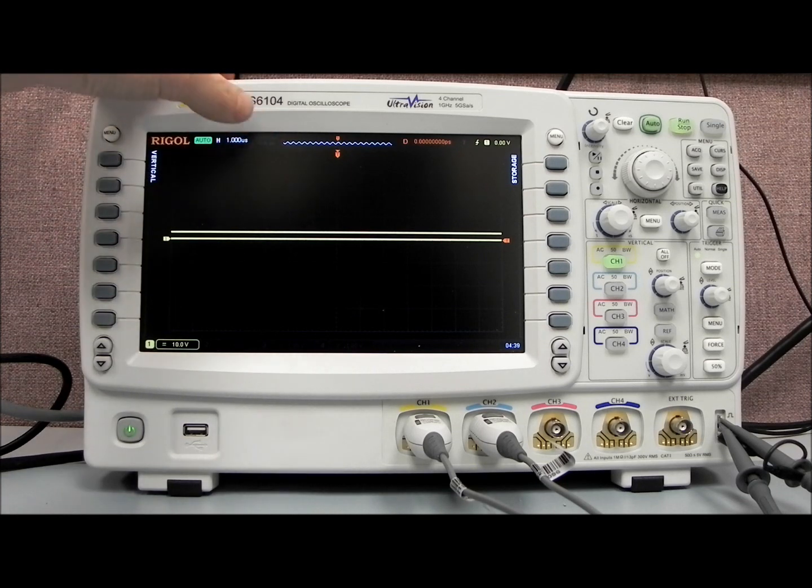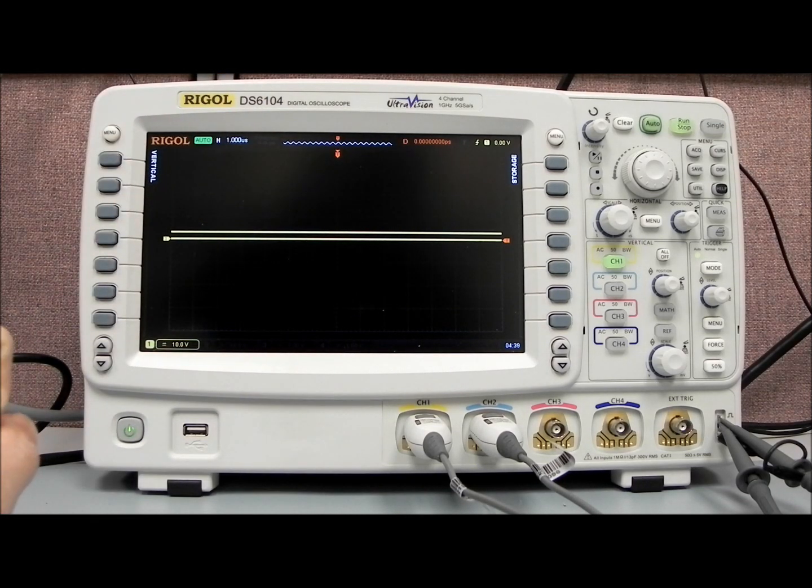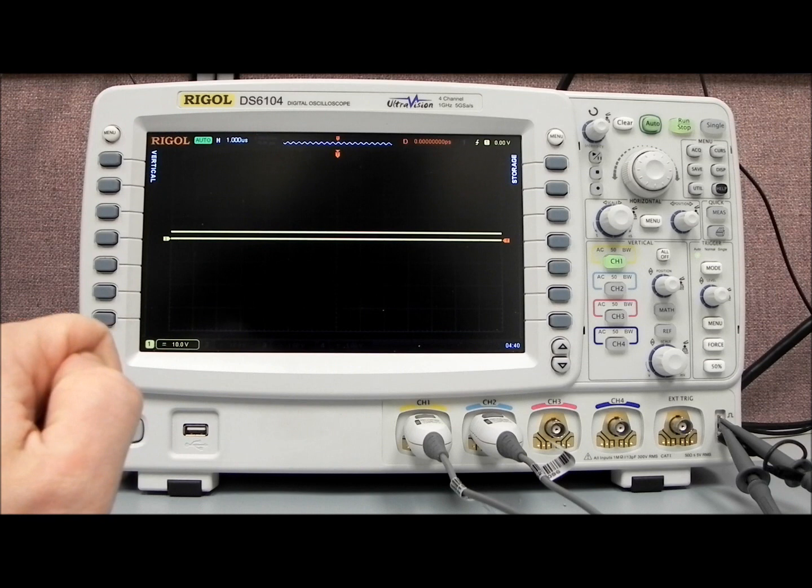Just to the right of that, we have the sample rate. In this case, it's 5 gigasamples per second. And then the number of data points that we're currently collecting per waveform, and that's set to 70,000 points.